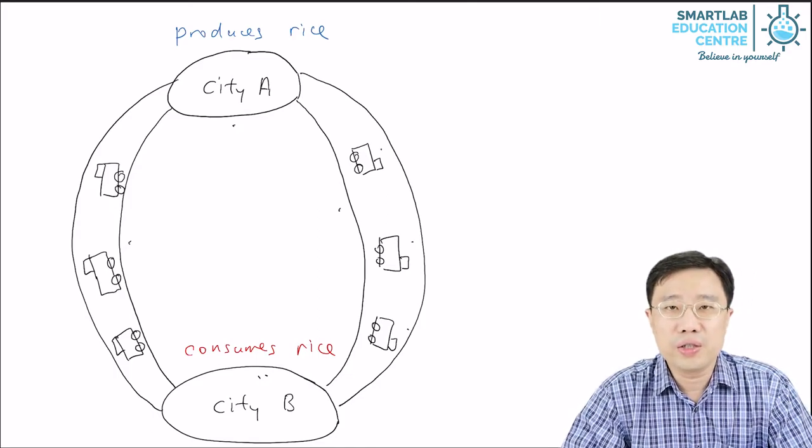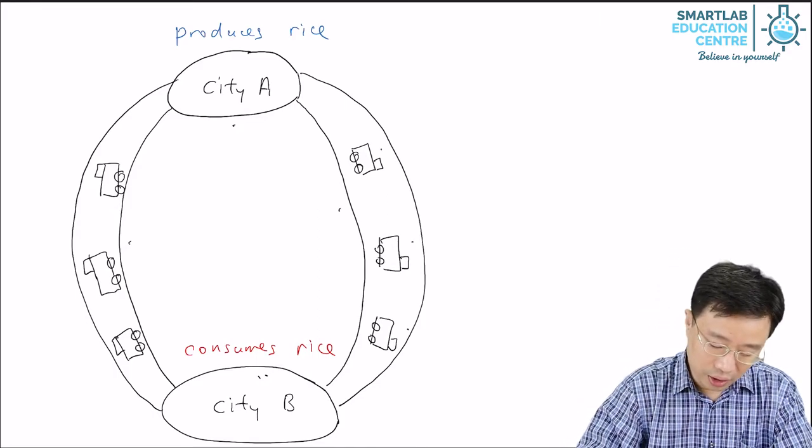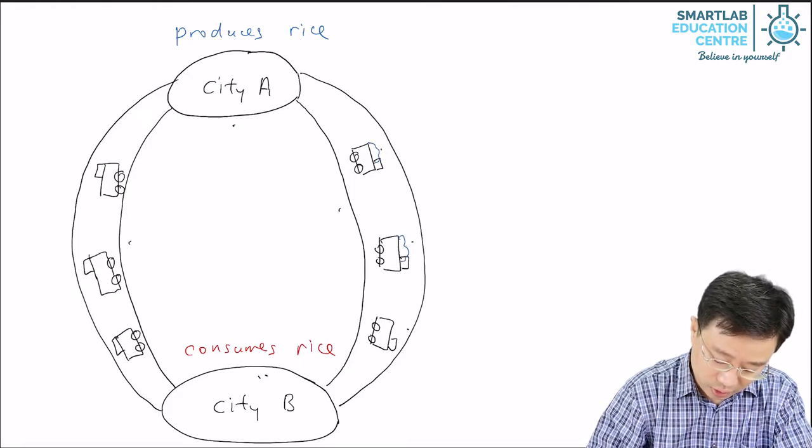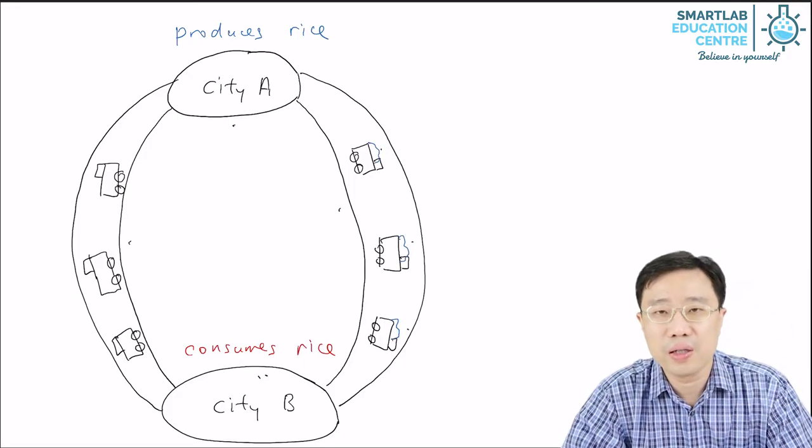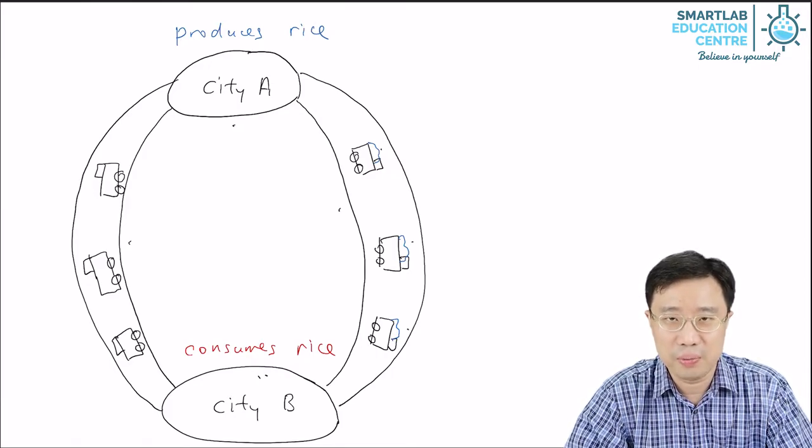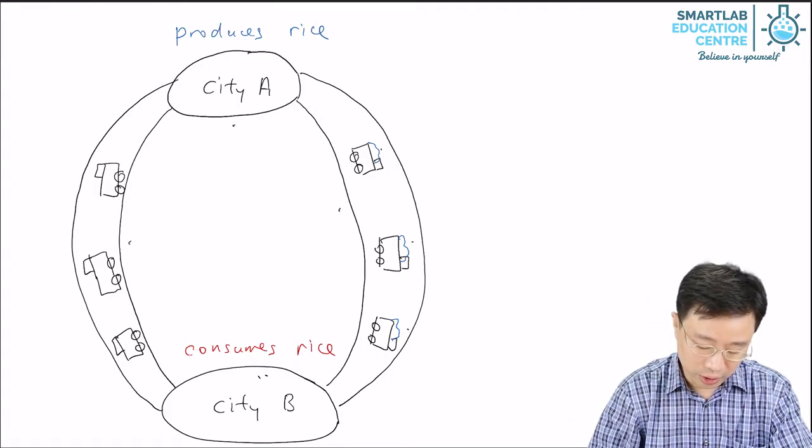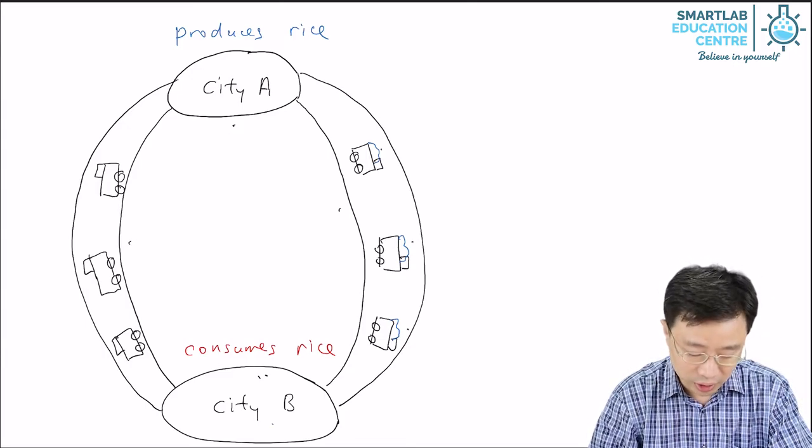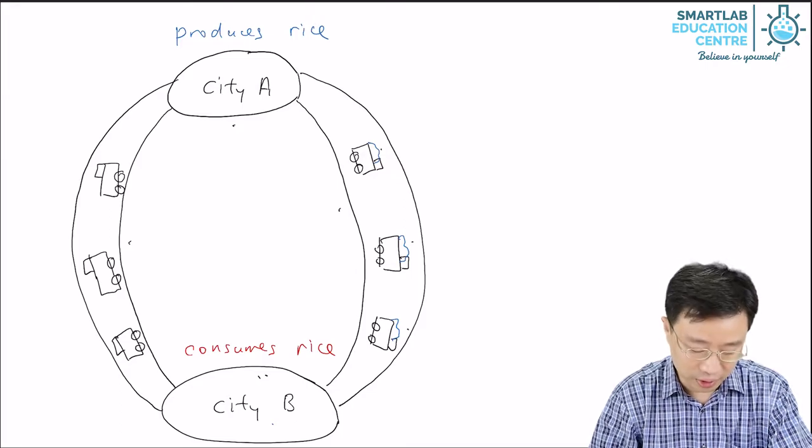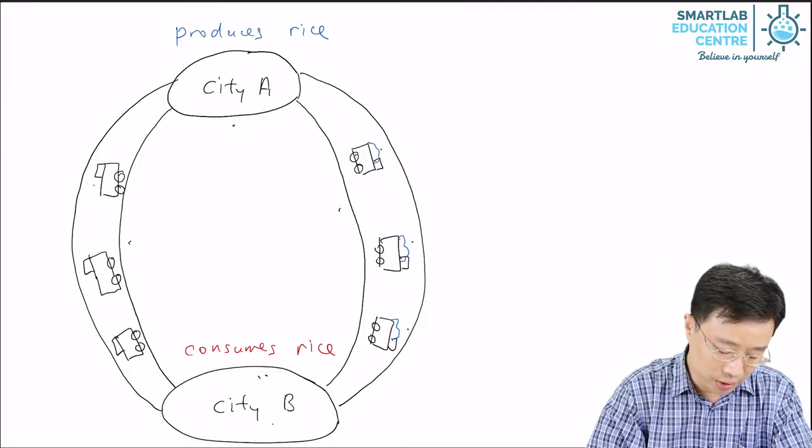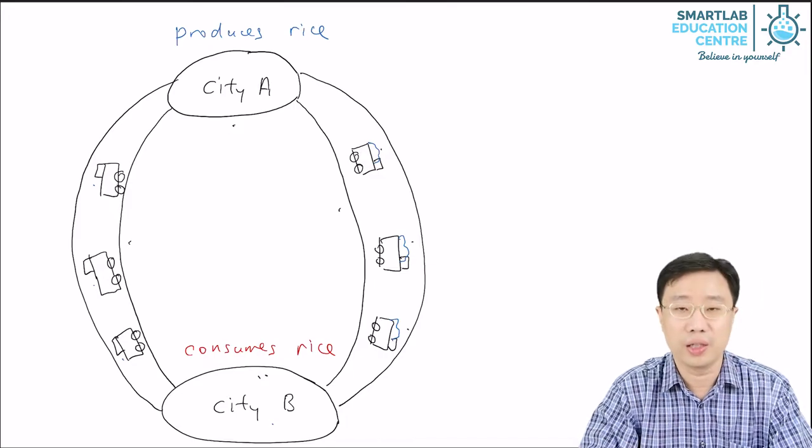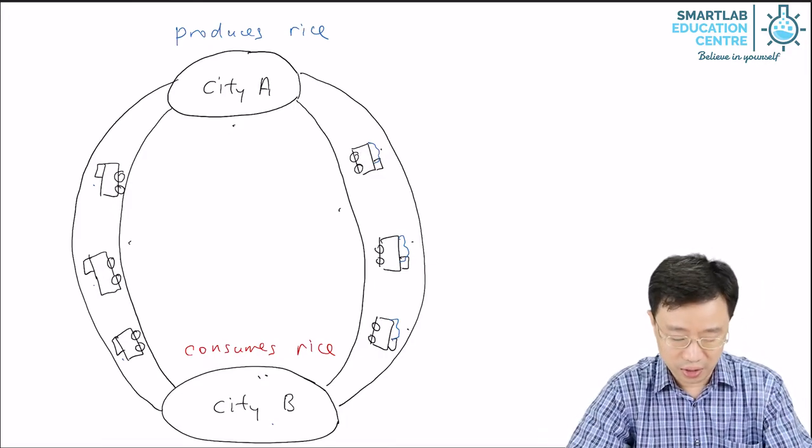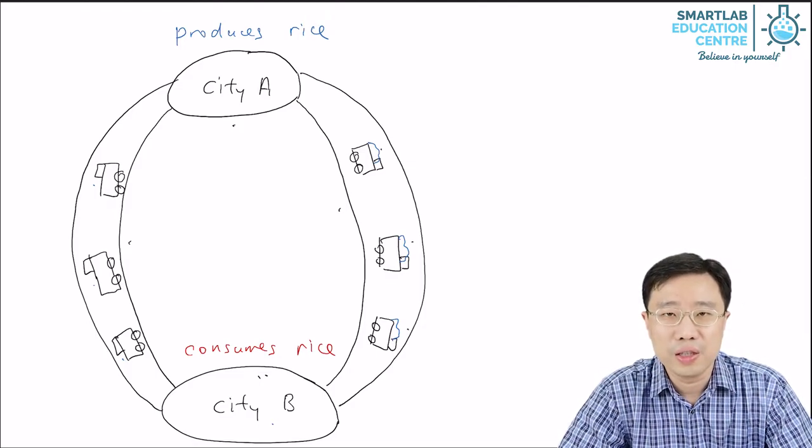So when these trucks go from City A to City B, they will be filled with rice. And once these trucks arrive at City B, they will unload their rice in City B and then they will return to City A. But this time, of course, these trucks, as you can see, they are empty, not carrying any rice. So this is a simple story of two cities.